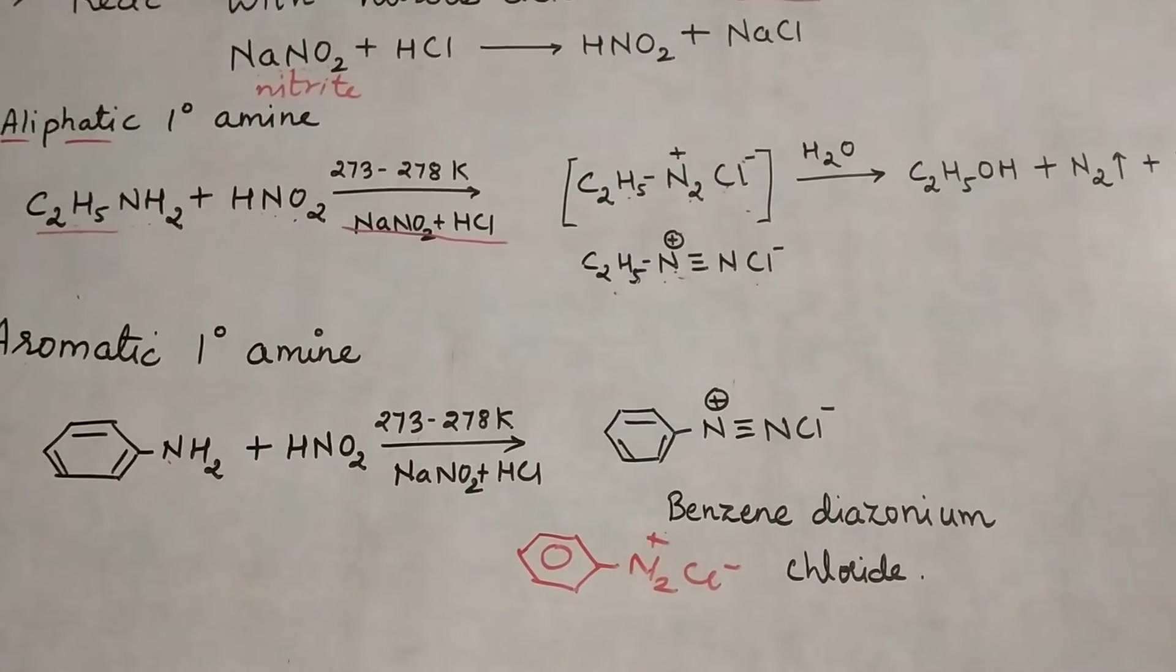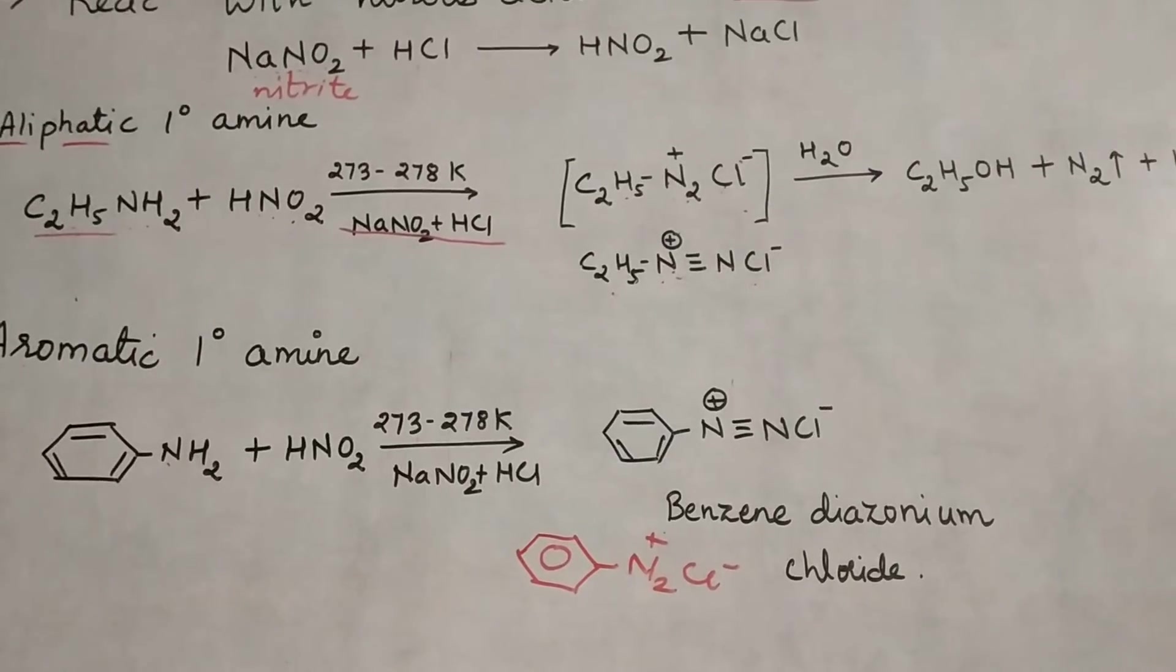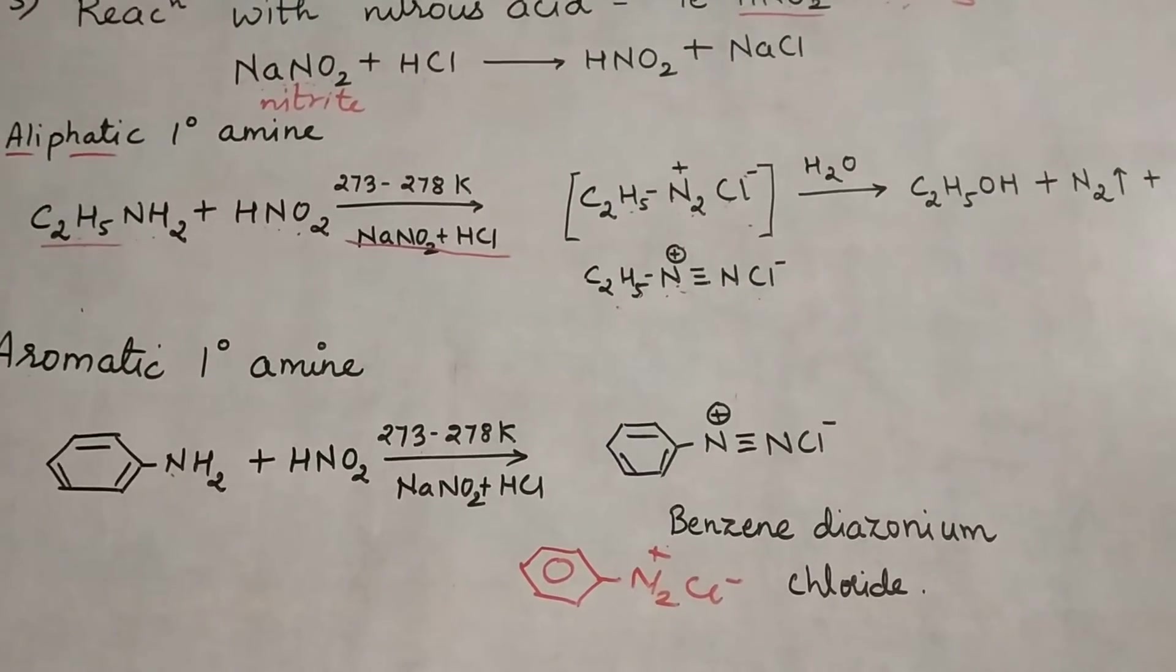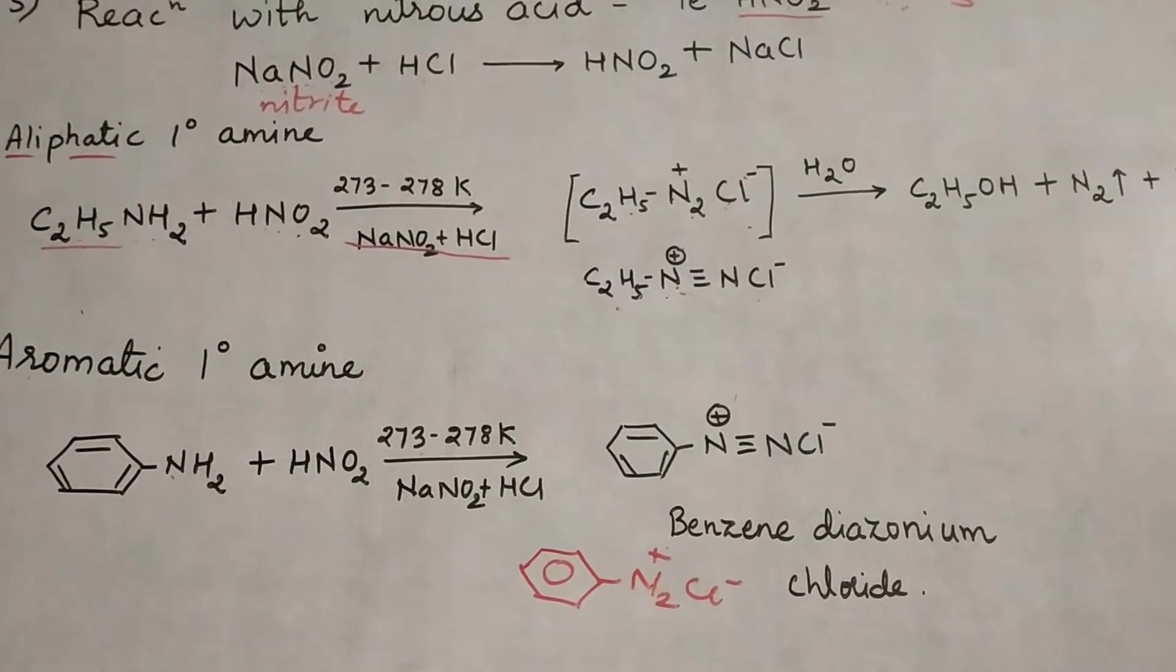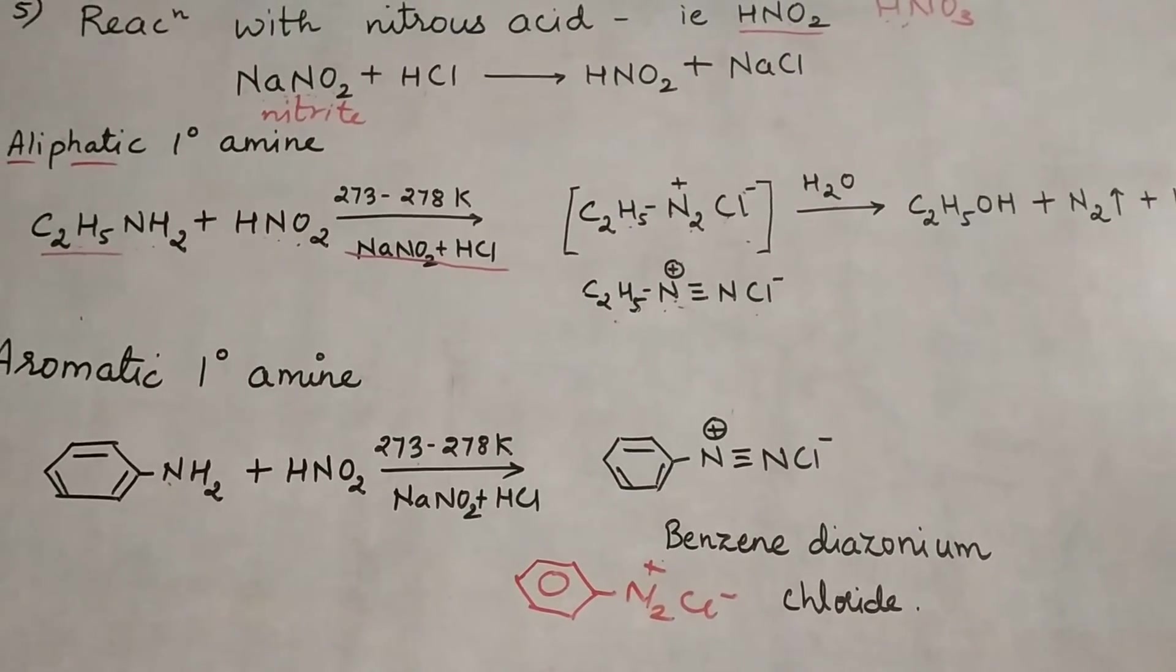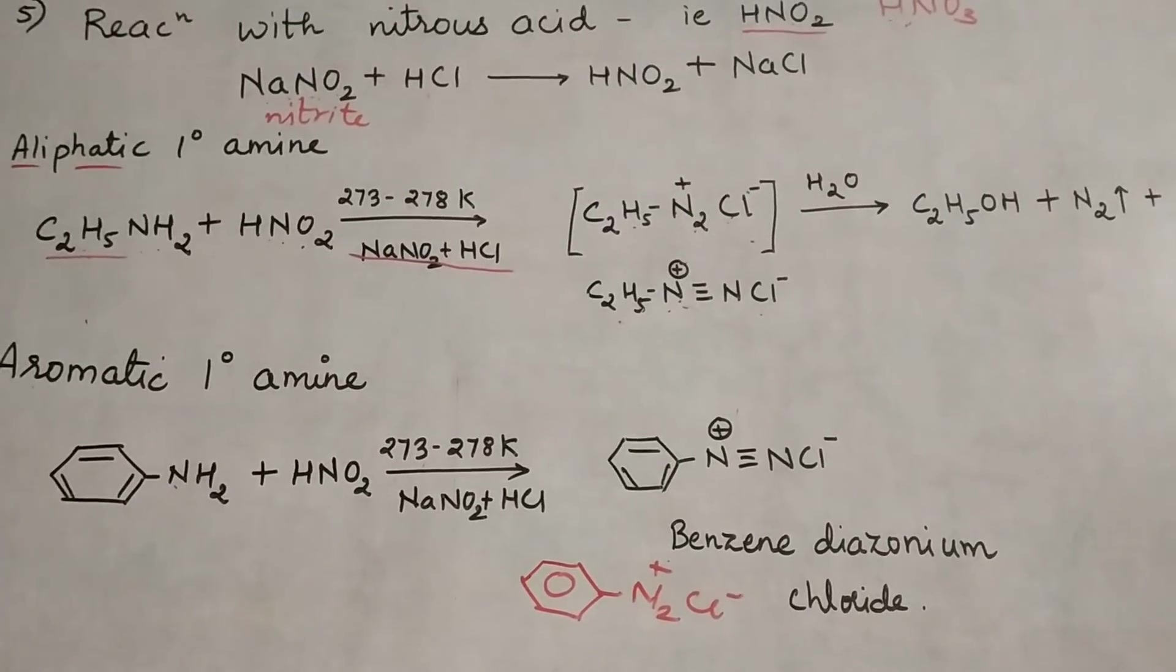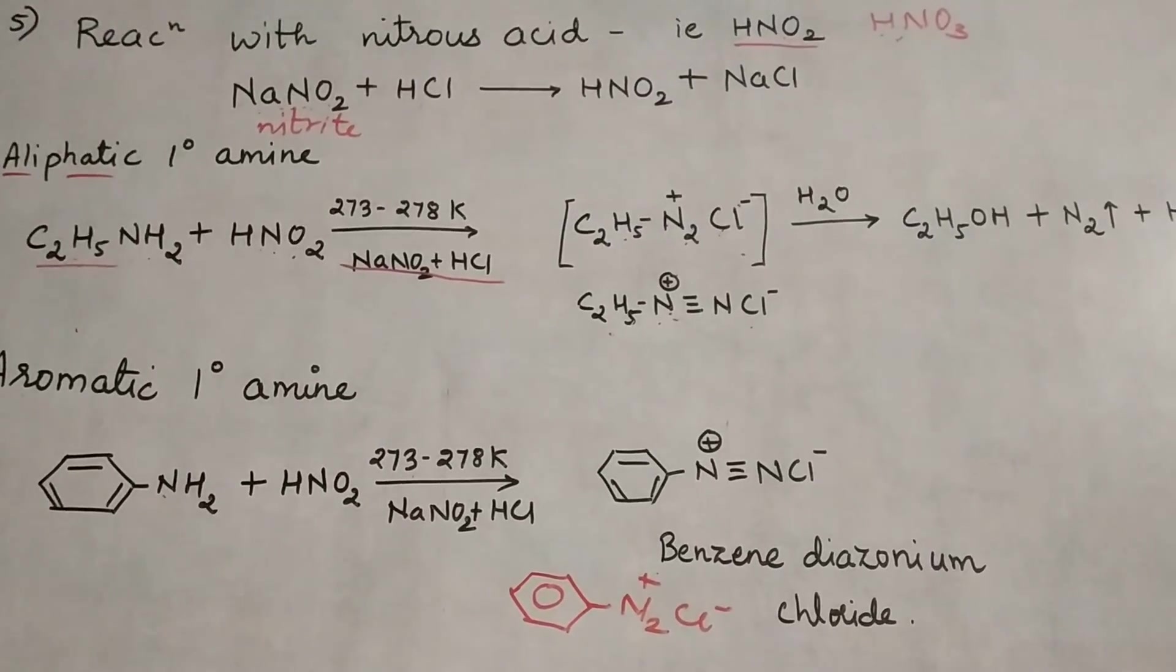In the earlier case with the aliphatic primary amine, the ethane diazonium chloride intermediate was unstable, so it decomposed to form an alcohol, nitrogen gas, and HCl. The key difference between aliphatic and aromatic primary amines must be noted—in the aromatic case, the reaction stops at the diazonium salt. That's all for today.